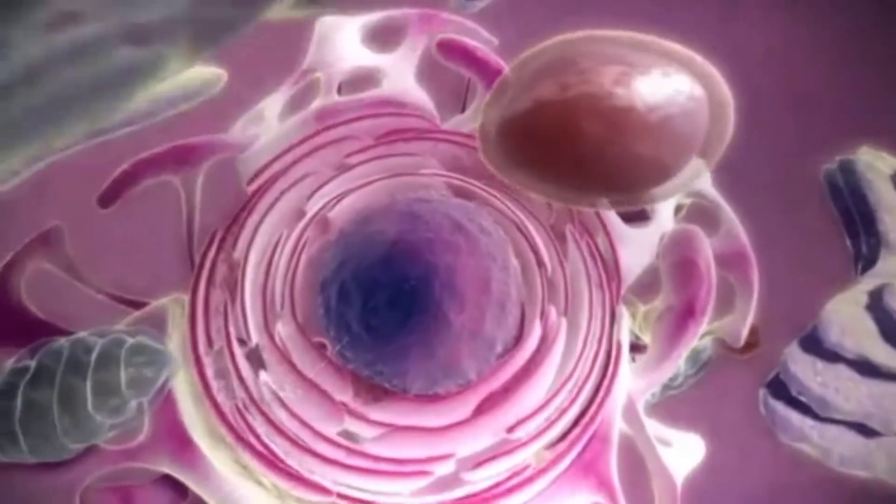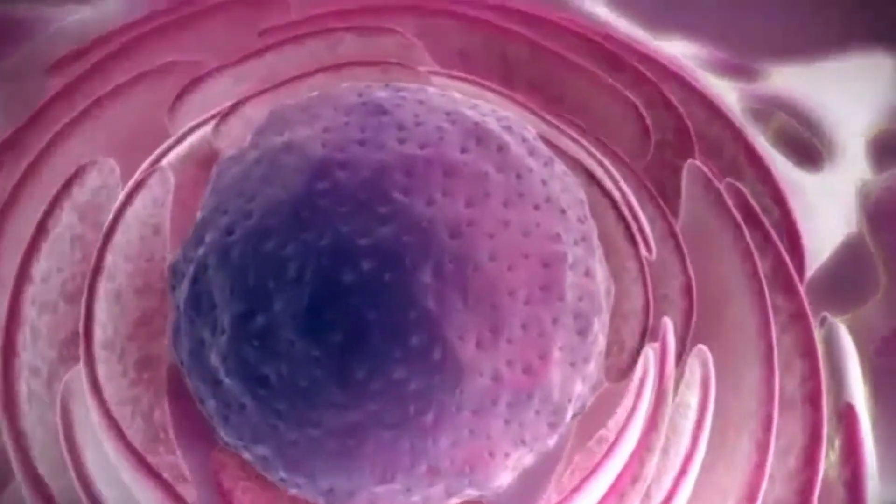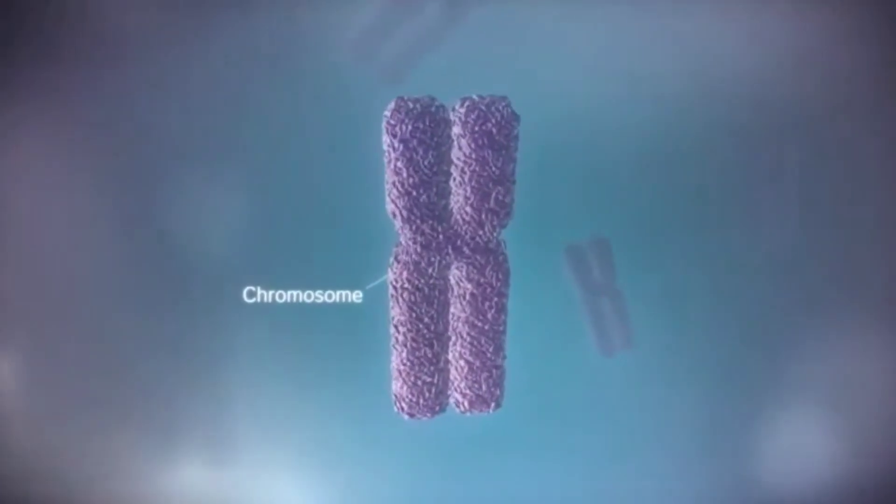The nucleus contains the genome. In humans the genome is split between 23 pairs of chromosomes.